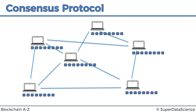The challenge for a consensus protocol, as you recall from the Byzantine fault tolerance example, was that the generals had to understand which command to listen to — whether to attack or retreat. They had to come up with a consensus protocol to solve that challenge. In our case, the consensus protocol for a blockchain has to solve two main challenges.